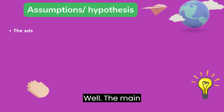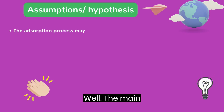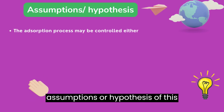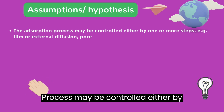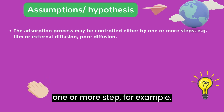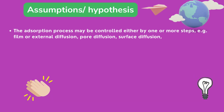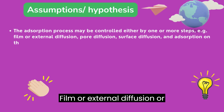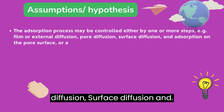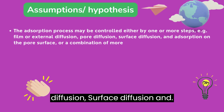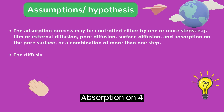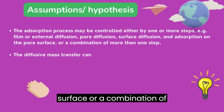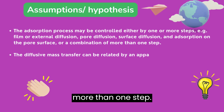The main assumptions or hypothesis of these models are: the adsorption process may be controlled either by one or more steps — for example, film or external diffusion, pore diffusion, surface diffusion, and adsorption on pore surface, or a combination of more than one step.